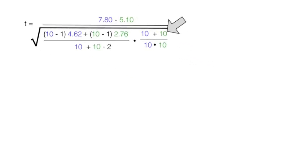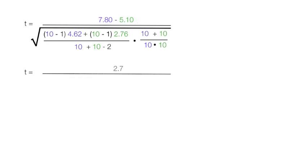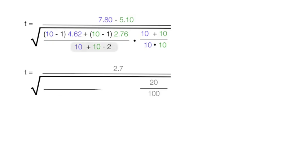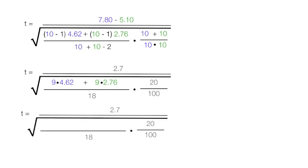I'll follow this pattern: first I'll compute one part, then the other, then multiply those two together. So: 7.8 minus 5.10 is 2.7, divided by the square root of — 10 plus 10 is 20, divided by 10 times 10, which is 100. Then 10 plus 10 minus 2 is 18. Then 10 minus 1 is 9, times 4.62, plus 9 times 2.76. Nine times 4.62 equals 41.6, and 9 times 2.76 equals 24.9.